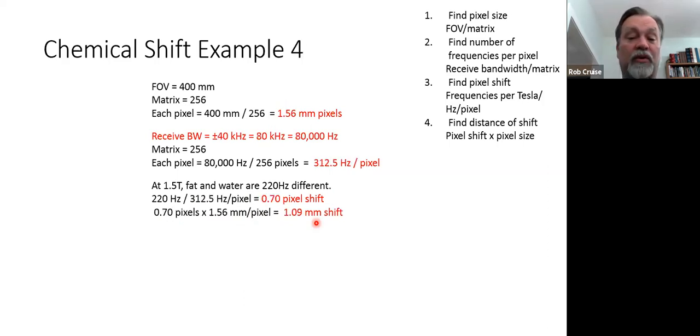Now we're going to do something a little different now. Our field of view is still the same. Our matrix is still the same. So our pixel size is still the same. Now we went from a plus and minus of 10 to a plus and minus of 40 kilohertz. So that means 80 kilohertz total frequency range, 80,000 hertz all together because we're changing it to match our hertz down here in step number three. So 80,000 divided by 256 equals 312.5 hertz per pixel. So every pixel has 312.5 hertz.